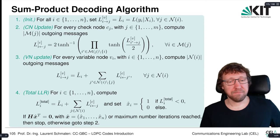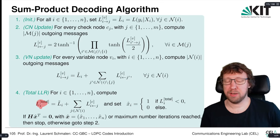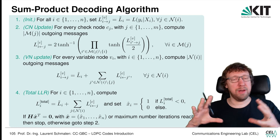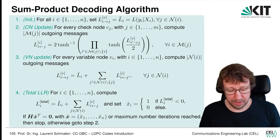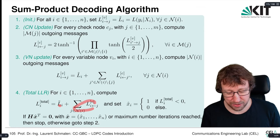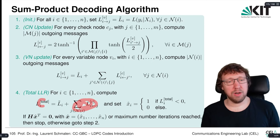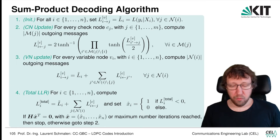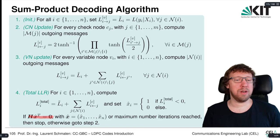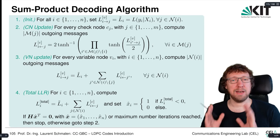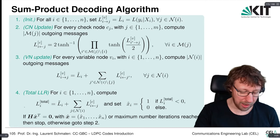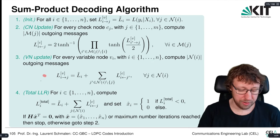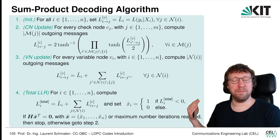After these two steps, we make a decision. For every variable node, we compute the total (a posteriori) LLR: L̃_i plus the sum of all incoming check-node messages. If this is negative we decide X̂=1; if positive, X̂=0. We then check whether X̂ is a valid codeword by verifying H·X̂ = 0. If so, we are done; otherwise we return to step 2 and repeat until a valid codeword is found or the maximum iteration budget is exhausted.